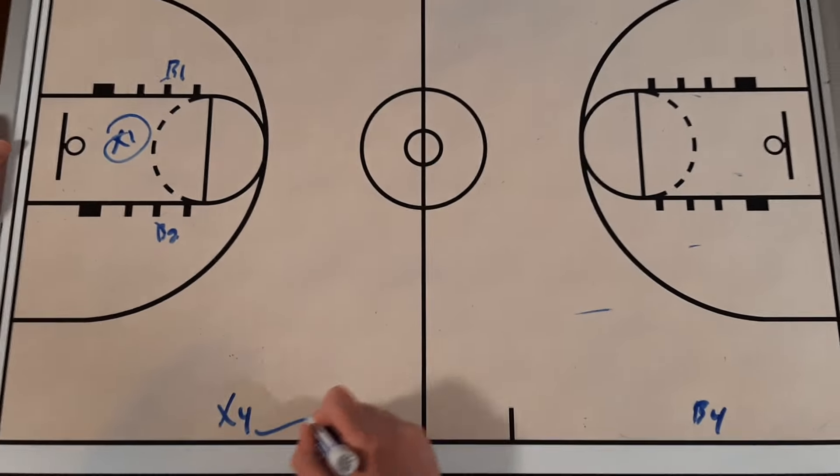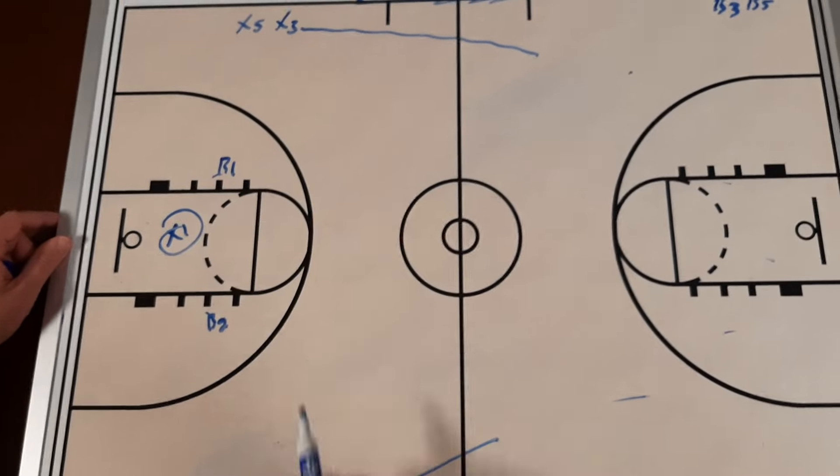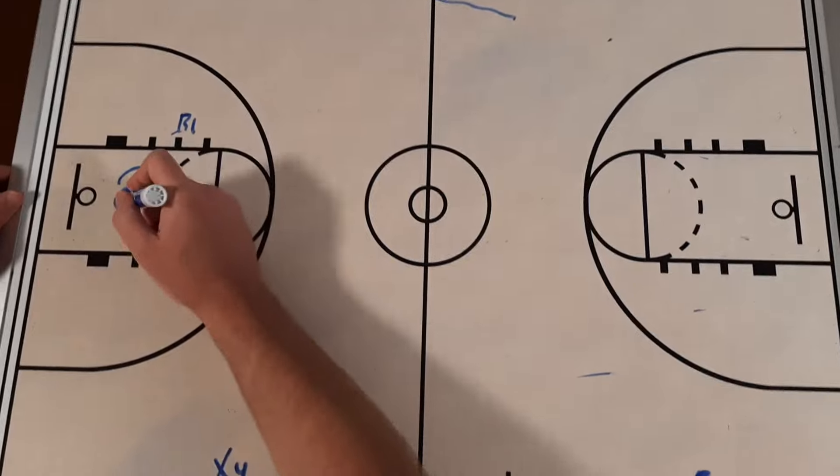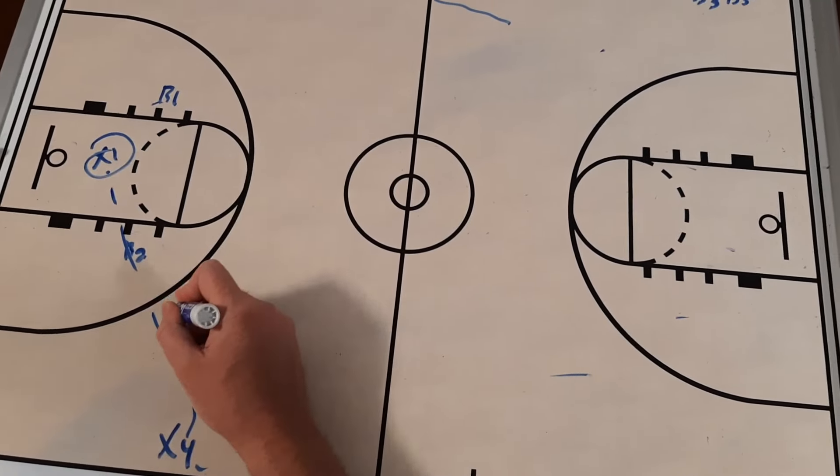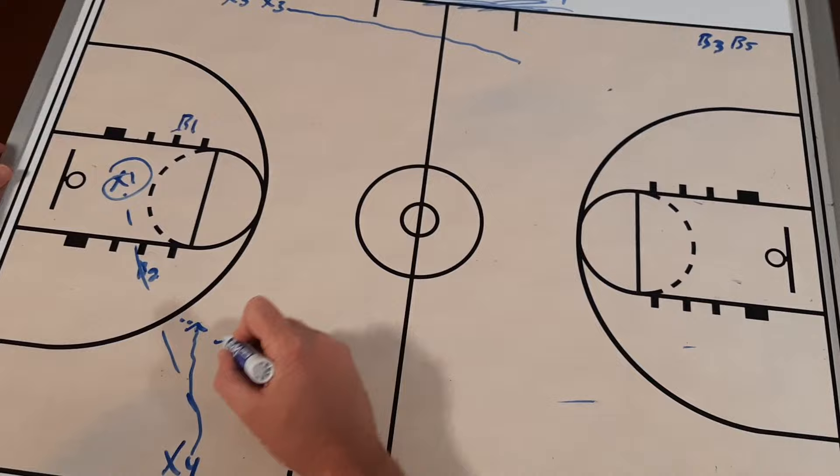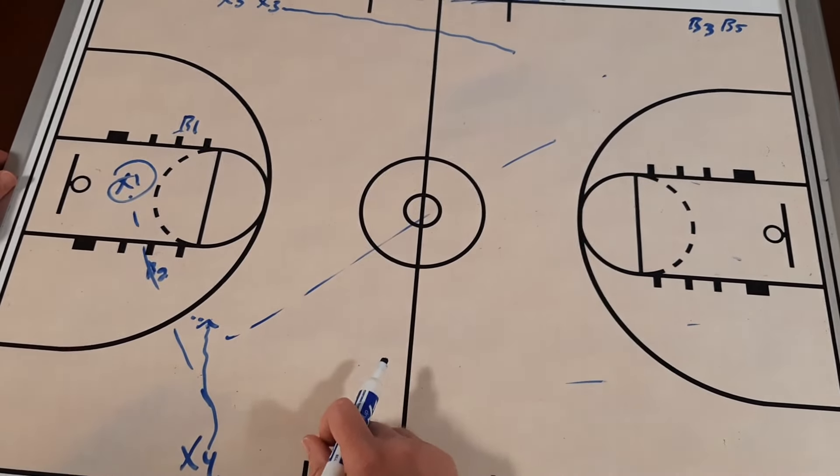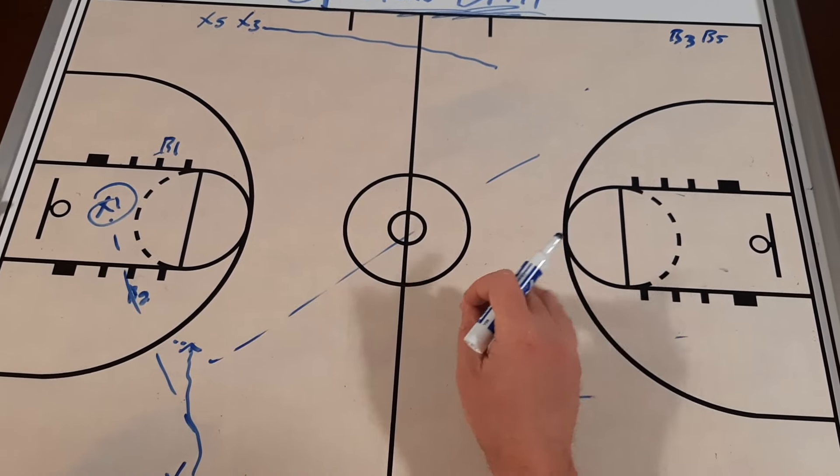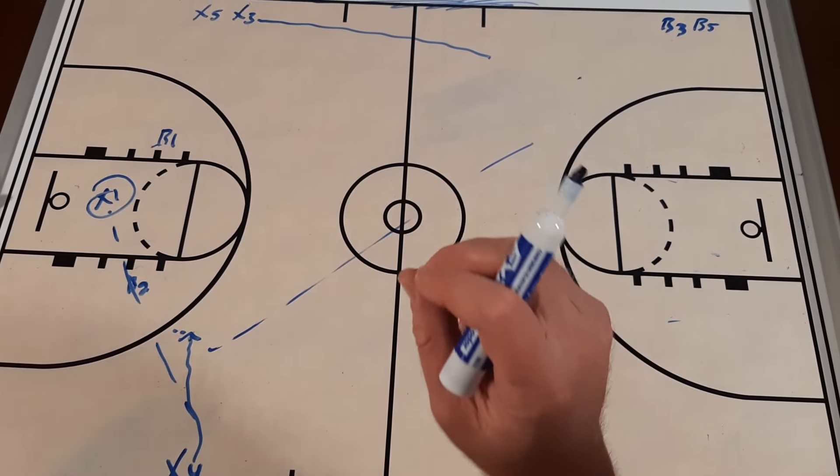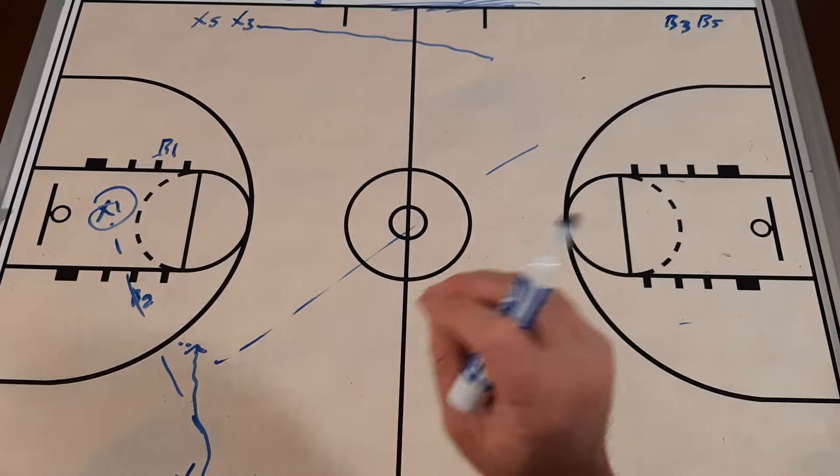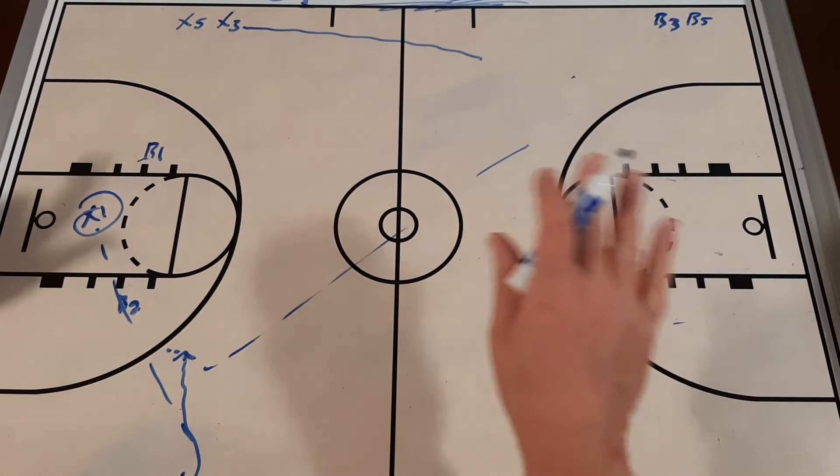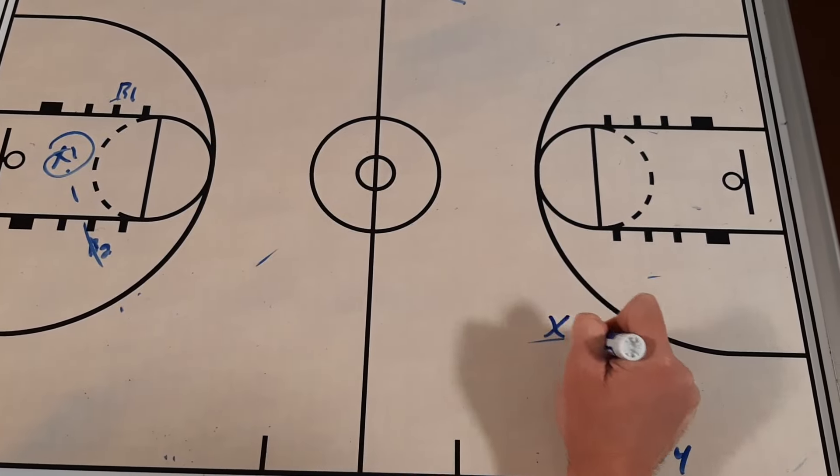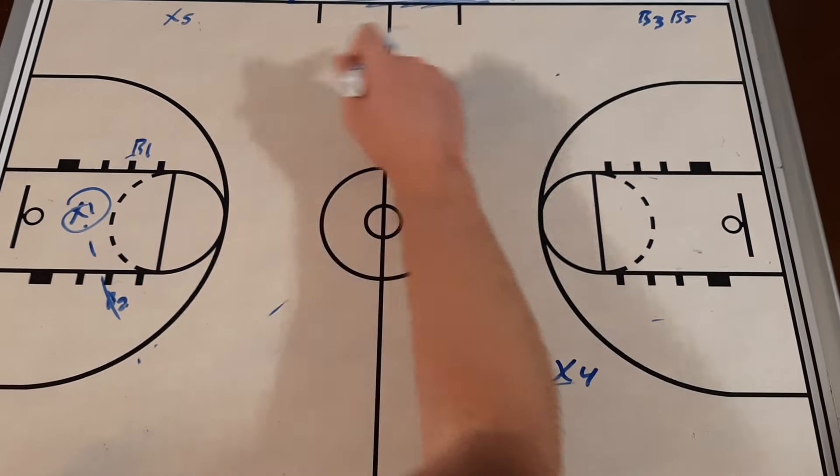Once X1 secures that rebound, we're going to get X3 and X4 on the court. X1 could get the rebound, push, and hit them. X1 could hit our X4, free-throw line extended for an outlet, one dribble, and they could zip it up to X3. But we're looking to attack and score as quick as possible. You could put time constraints and only give them 10 seconds to score or 5 seconds to score. Whatever you want to do with your team, there's a number of different things that you can do.